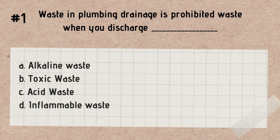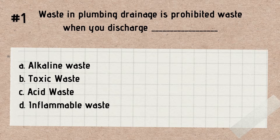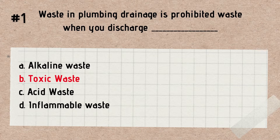Let us begin. Question number 1. Waste in plumbing drainage is prohibited waste when you discharge a blank. A. Alkaline waste. B. Toxic waste. C. Acid waste. D. Inflammable waste. Answer: Toxic waste. Remember, waste in plumbing drainage is prohibited waste when you discharge toxic waste.